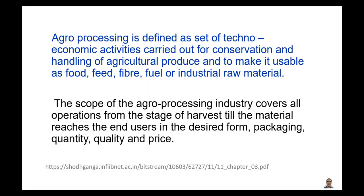Agro-processing is defined as a set of techno-economic activities carried out for conservation and handling of agricultural produce and to make it usable as food, feed, fiber, fuel, or industrial raw material. That means in agro-processing, harvested agricultural produce are technically converted to some value-added products.